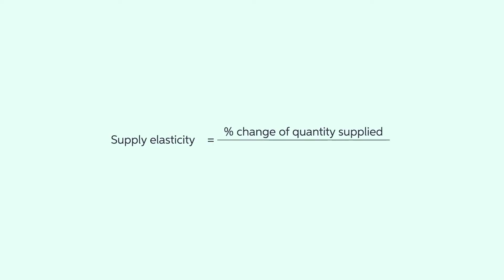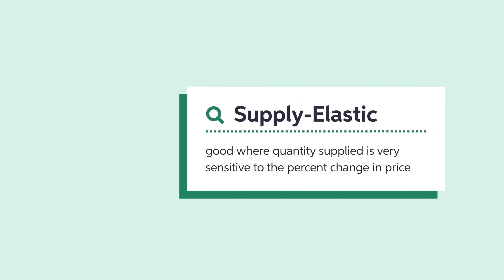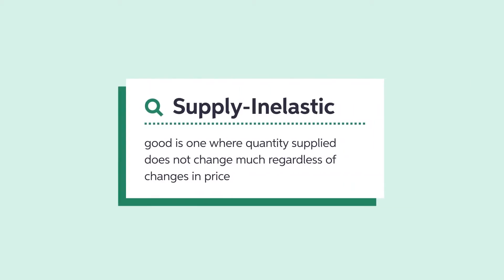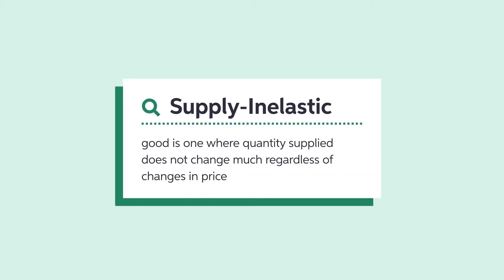Elasticity of supply refers to percent change in quantity produced given percent change in price. A supply elastic good is where quantity supplied is very sensitive to the percent change in price. A supply inelastic good is one where quantity supplied does not change much regardless of changes in price.